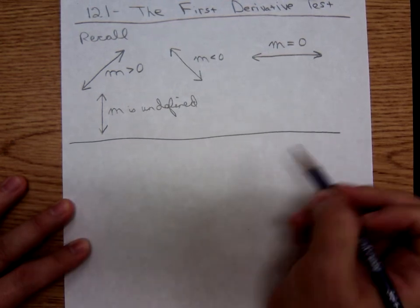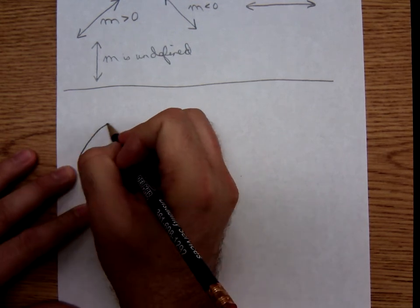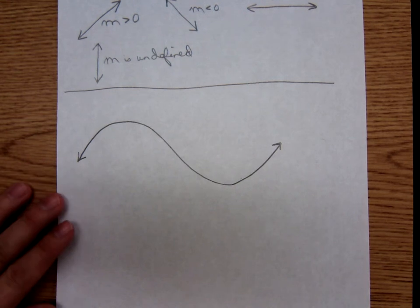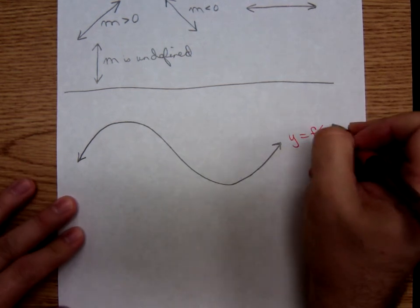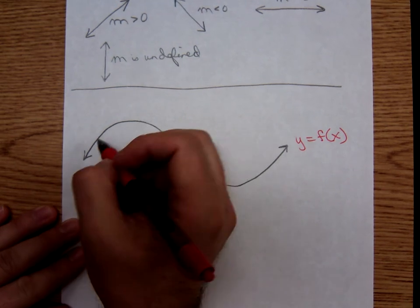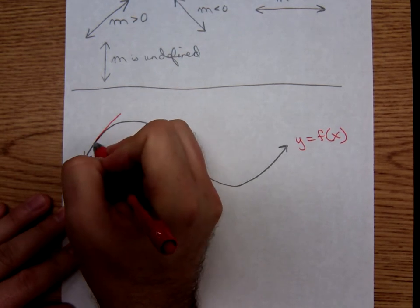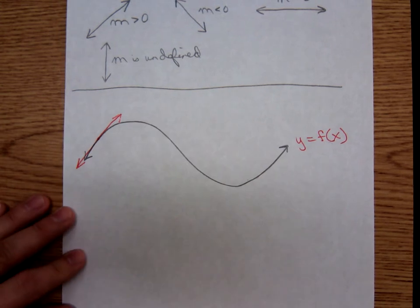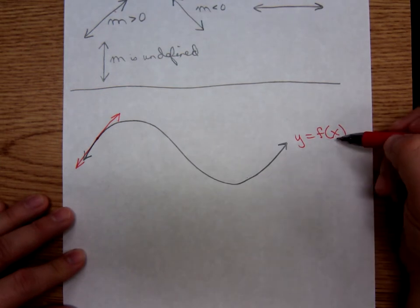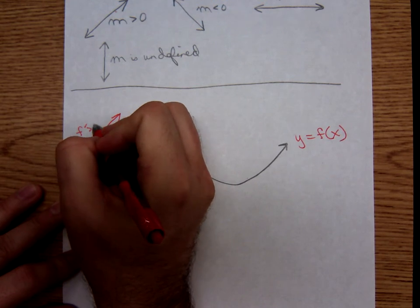So now let's look at a graph, moving on to the calculus material. Let's suppose we have the following curve — the graph of y equals f of x. If we choose a point over here on the left side and draw the tangent line, we see that the tangent line is rising from left to right. Remember, the slope of the tangent line is given by the derivative of f. So over here where the graph is rising from left to right, f prime is greater than zero.